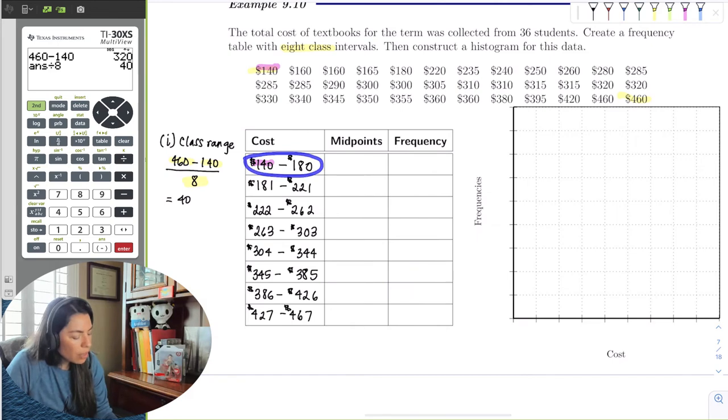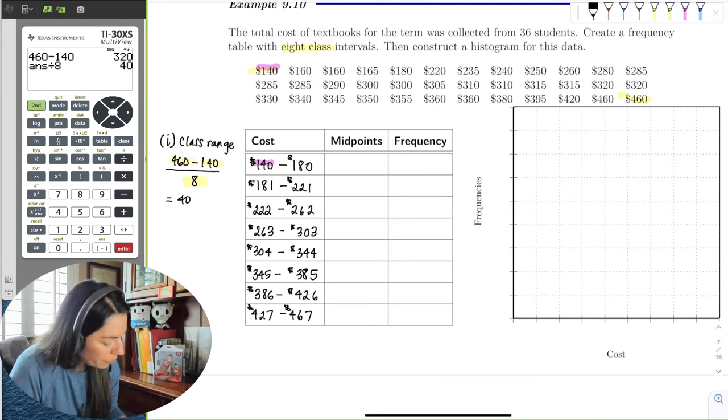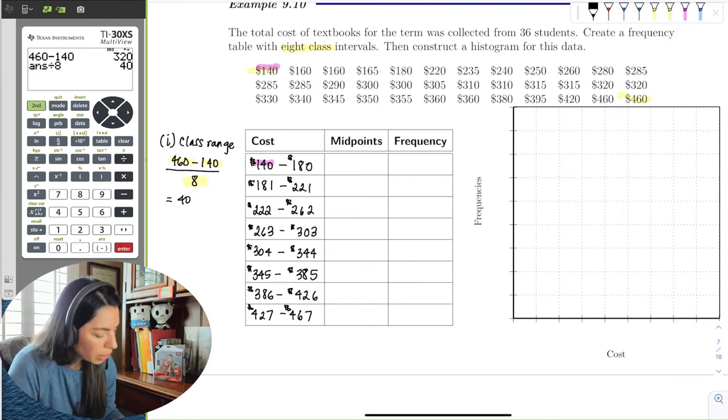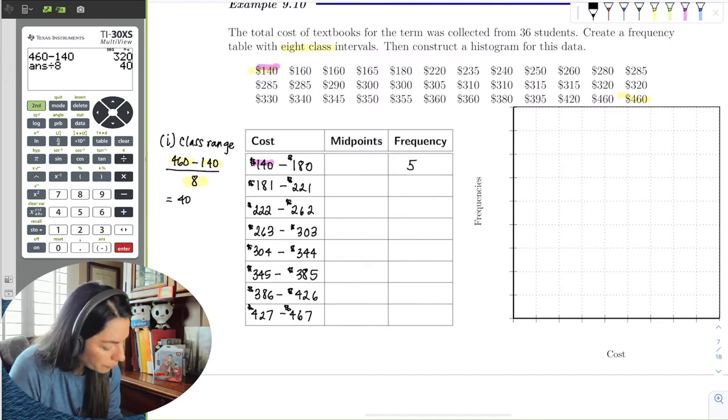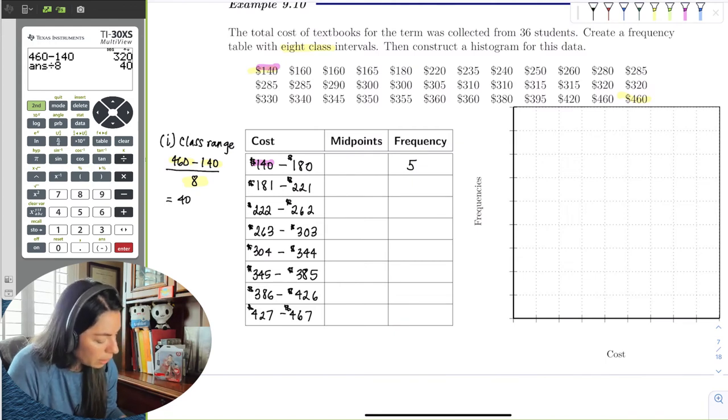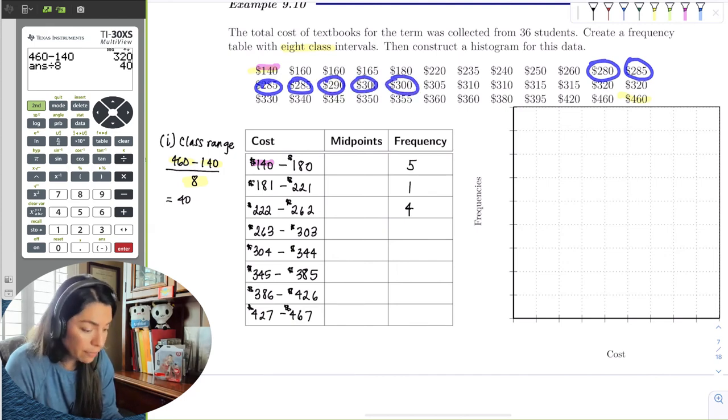And then notice if you subtract the upper limit from the lower limit, it's 40, 40, 40, 40, 40, all the way down. So let's go ahead and just count now. So how many pieces of data between 140 and $180? So let's count. 1, 2, 3, 4, 5. So notice we're going to include that 180. From between 181 and 221, so 1. Between 222 and 262, so 1, 2, 3, 4. Between 263 and 303, so 1, 2, 3, 4, 5, 6, 7. So there's a big one.